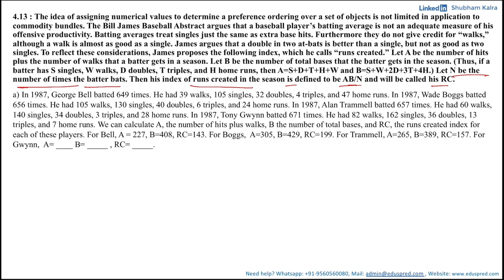With this information, in 1987 George Bell batted 649 times; he had 39 walks, 105 singles, 32 doubles, 4 triples, and 47 home runs. In 1987, Wade Boggs batted 656 times; he had 105 walks, 130 singles, 40 doubles, 6 triples, and 24 home runs.